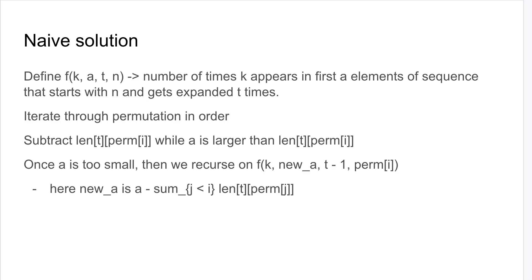So let's think about the naive solution. We'll define f(k, a, t, n) as the number of times k appears in the first a elements of the sequence. This is just basically from the definition of the problem.